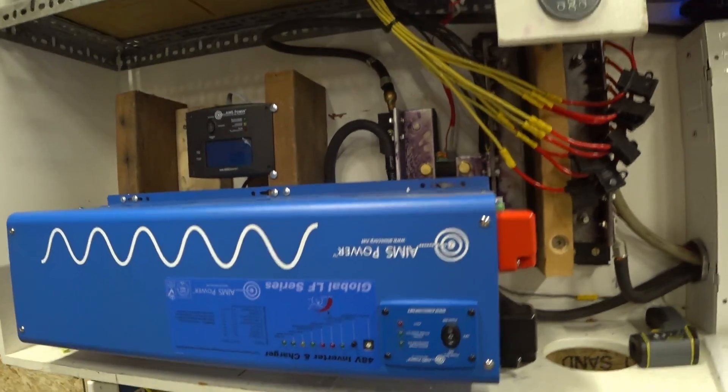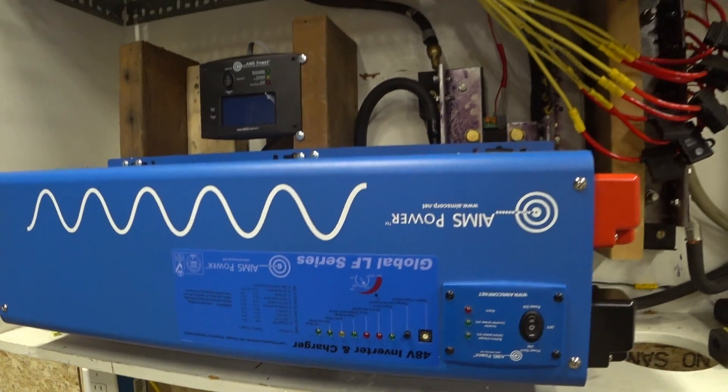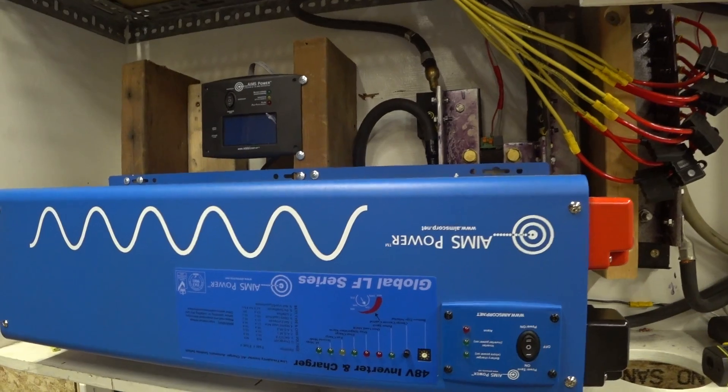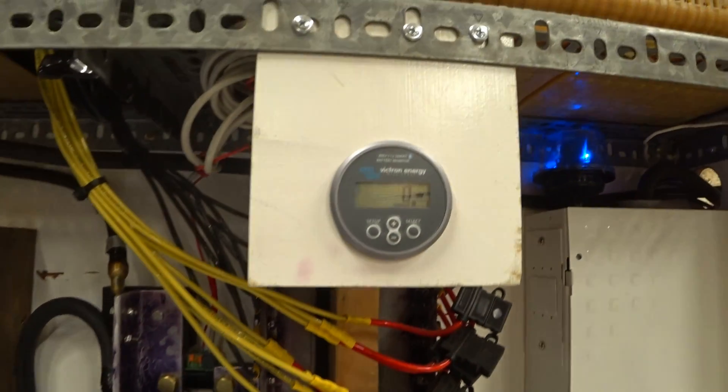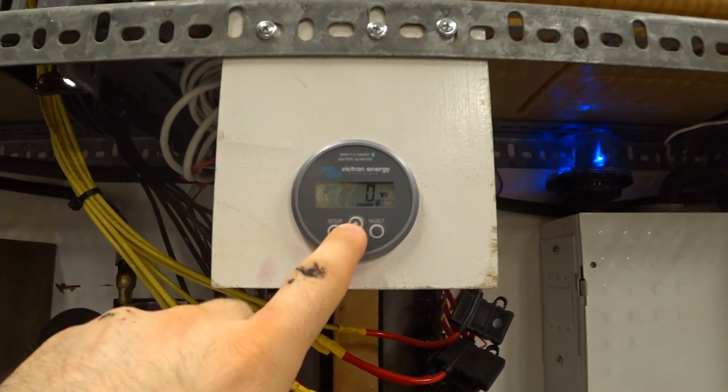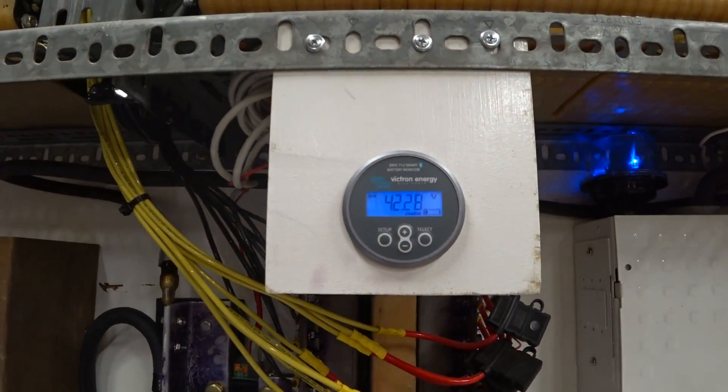So this was a great test last night. We ran this all night long, the water heater, dishwasher. Let's see, we even made dinner in the oven last night, and that's an electric oven. And right now it's shut off. The inverter's shut off, but we got 42.28.